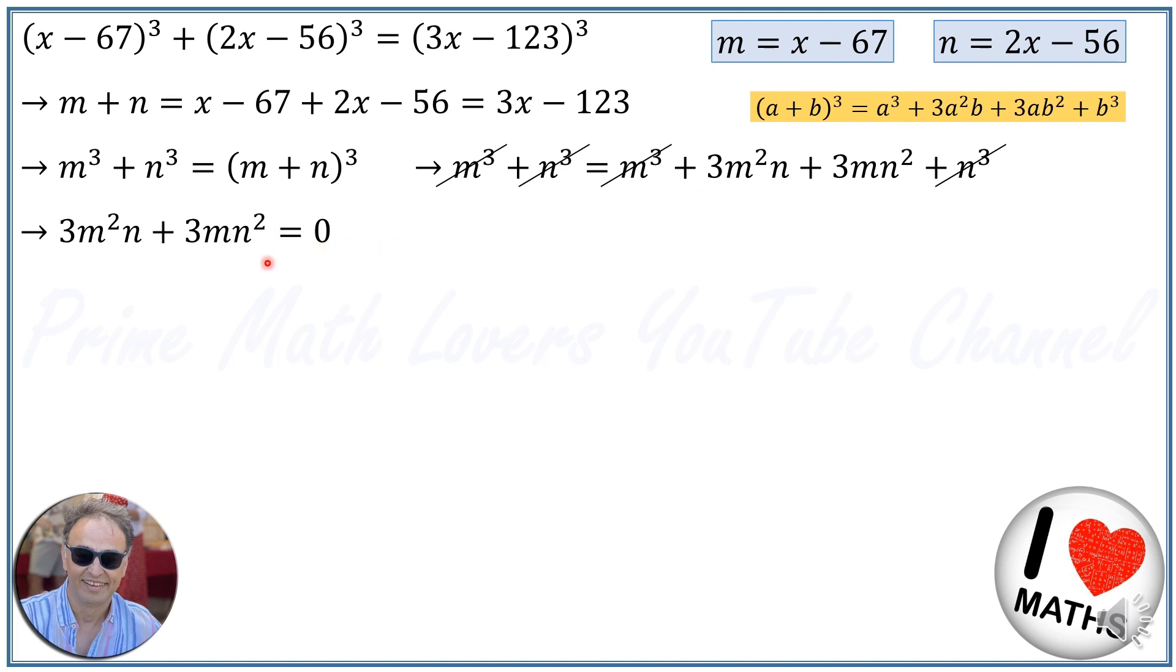Now we take out the common factor term, which is 3mn, and we will have 3mn times (m + n) is equal to 0. We can divide both sides of the equation by 3, and we will have mn times (m + n) is equal to 0.